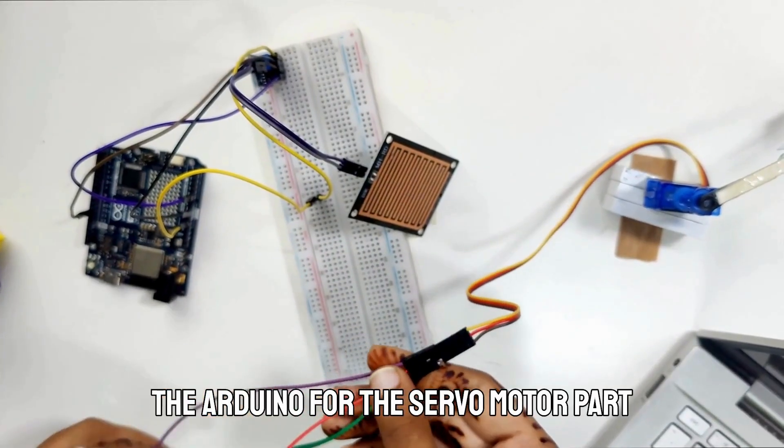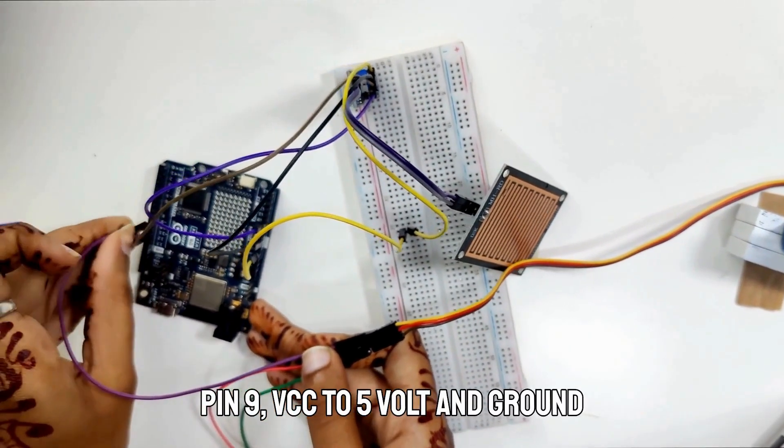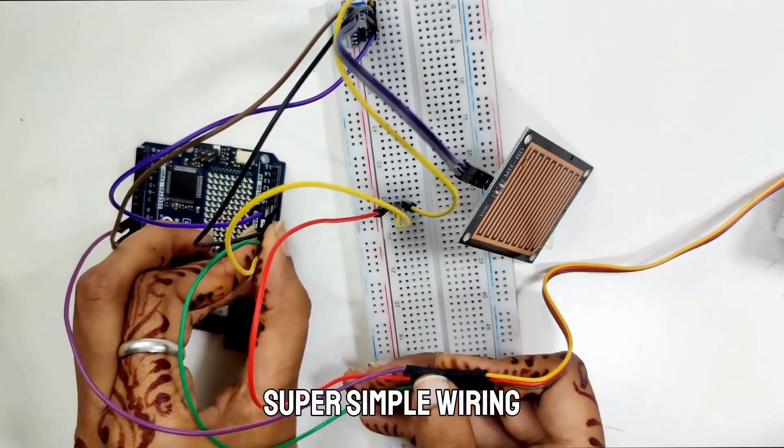For the servo motor part, I am connecting the signal pin to digital pin 9, VCC to 5V and ground to ground. That's it. Super simple wiring. This makes it beginner friendly and easy to perform. Now let's bring it to life with some Arduino code.